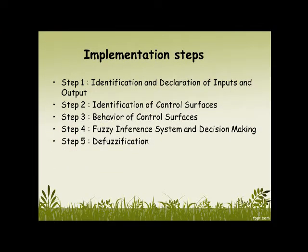The implementation steps — there are five steps. First, identification and declaration of input and output. Second, identification of the control surface of the graph. Step 3, behavior of the control surface. Step 4, Fuzzy Inference System and Decision Making. And Step 5, Defuzzification.